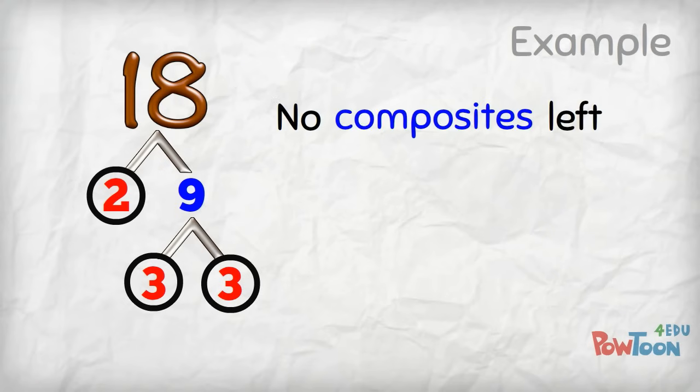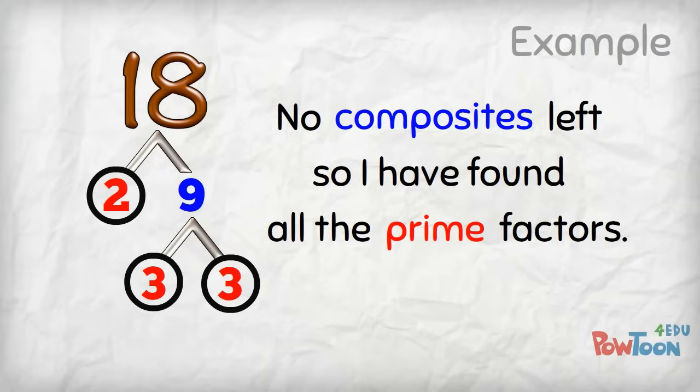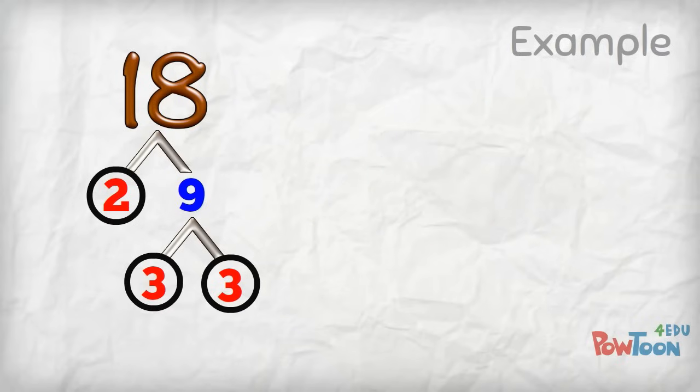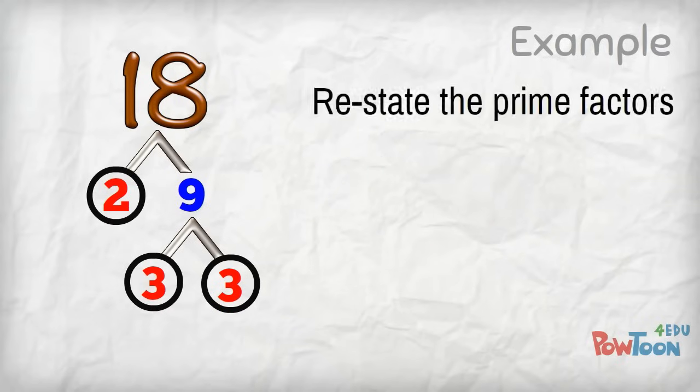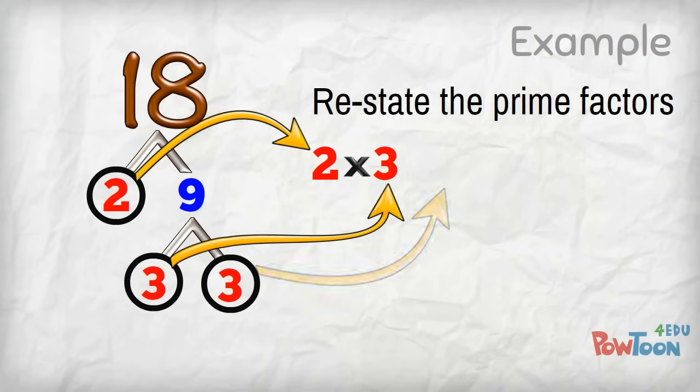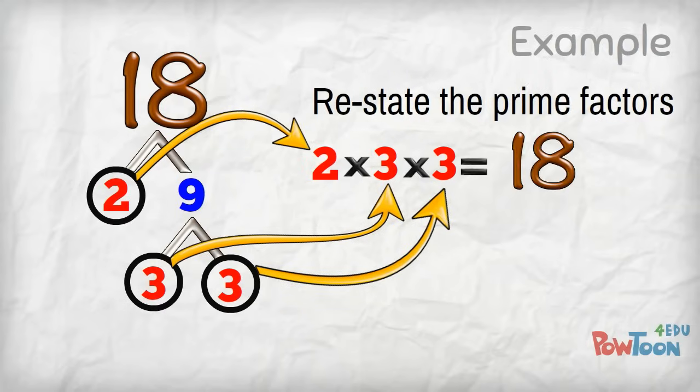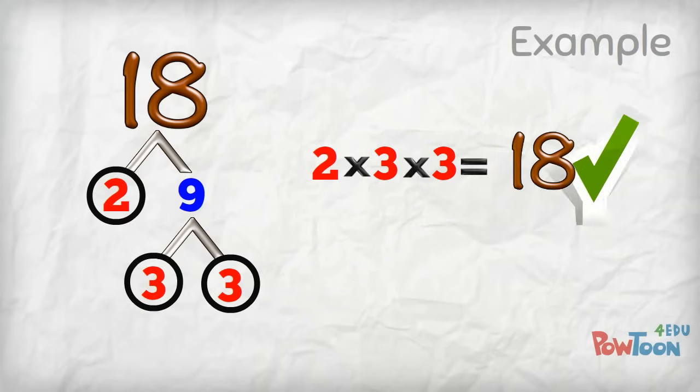I have no composite numbers left so now I know I have found all the prime factors. Next to the factor tree I restate the prime factors: 2 times 3 times 3 is 18. It's correct but it's not quite finished.